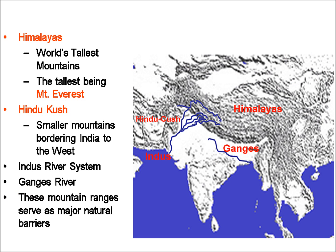Marked on the map you'll find the Himalayas, the tallest mountain range in the world. The tallest mountain within that range is the famous Mount Everest. Now be careful when you're asked a question because the letter S can change everything. Singular: what is the tallest mountain in the world? Mount Everest. Plural: what are the tallest mountains in the world? The Himalayas.